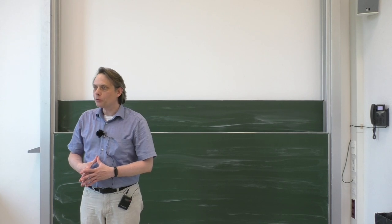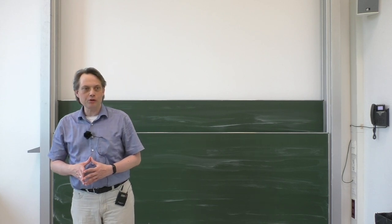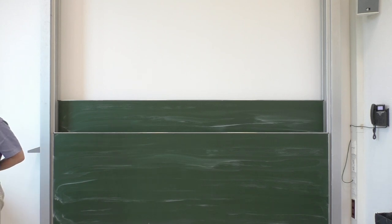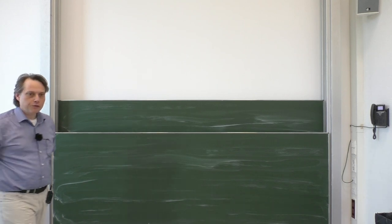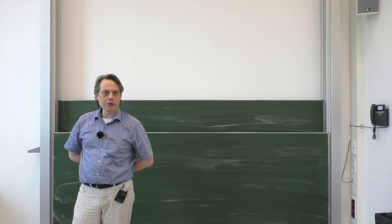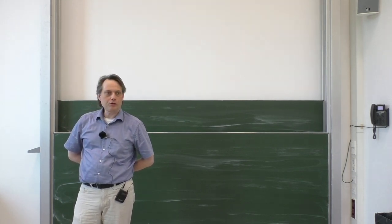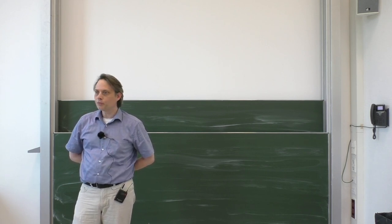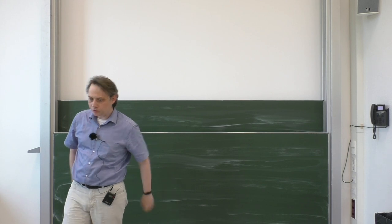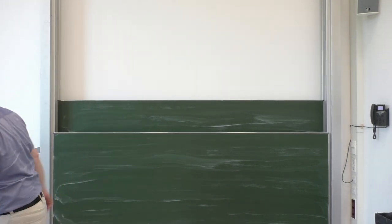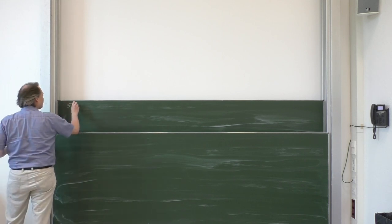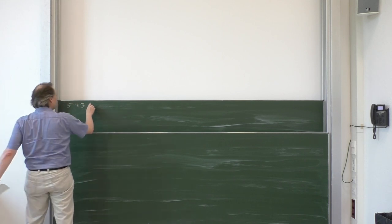Let us continue with renormalization group and the effective field theory. Today we will discuss several topics, and the first is a core topic: understanding why the combination of renormalization group plus EFT is so useful, because we will discuss how the combination resums large logarithms — which is the technical outcome of the combination. So we have section 5.3.3: resumming logarithms.